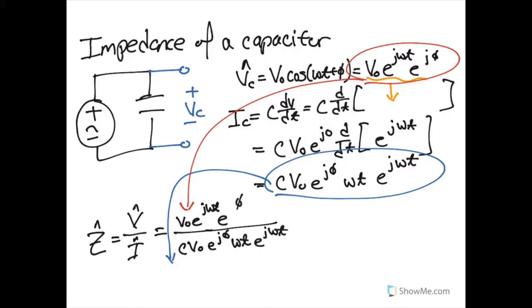What ends up happening is a lot of these variables end up canceling out. So these are gone, this right here term is gone, this j phi term is also gone. And so what we're left with is 1 over jwc.